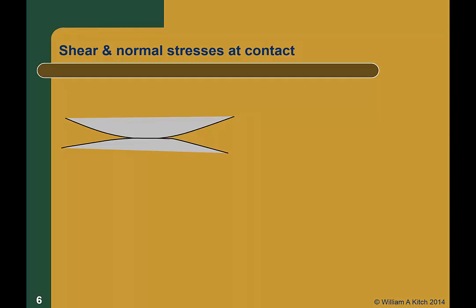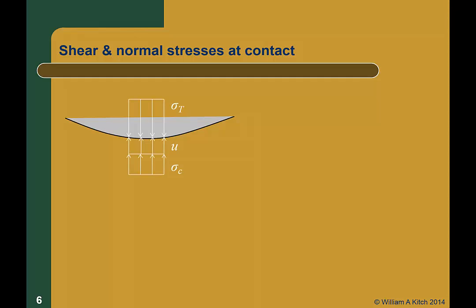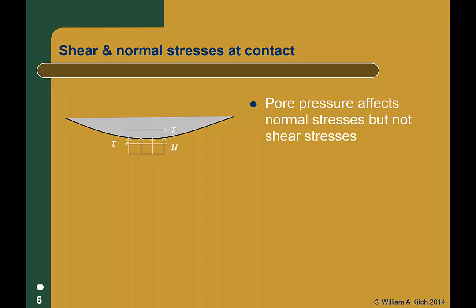If sigma T and tau are applied at the top of the interface, there must be an equal and opposite sigma T and tau at the bottom of the interface. We know that there is a pore pressure, U, acting normal to the contact and carrying part of the total stress, thereby reducing the stress which is carried across the contact, sigma C. However, the shear stress acts normal to the surface and therefore normal to the pore pressure. Therefore, the shear stress is not affected by the pore pressure and the full shear stress is transferred across the inner particle contact. So pore pressure affects normal stresses within a soil skeleton, but not the shear stresses.